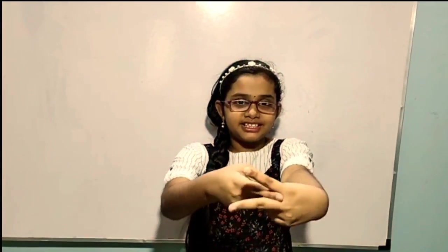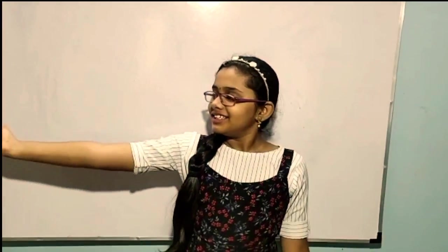There are some examples of angles on our body. These are two arms and this is the common vertex. This is your vertex and these are your arms.